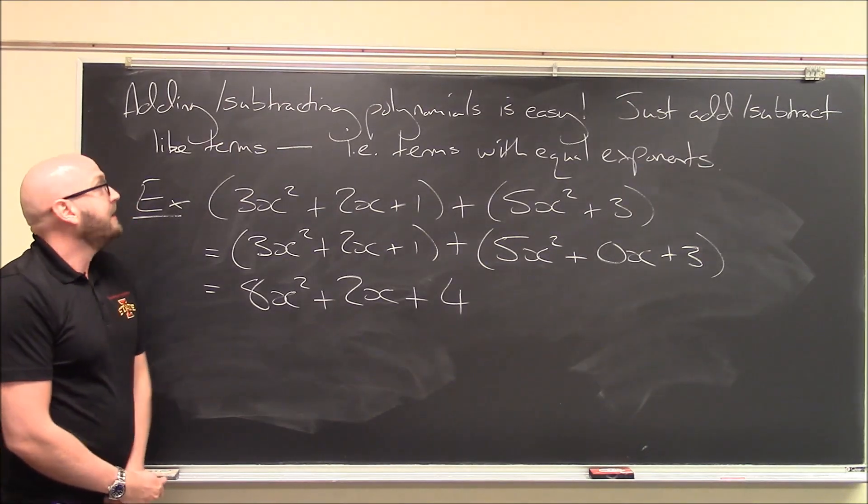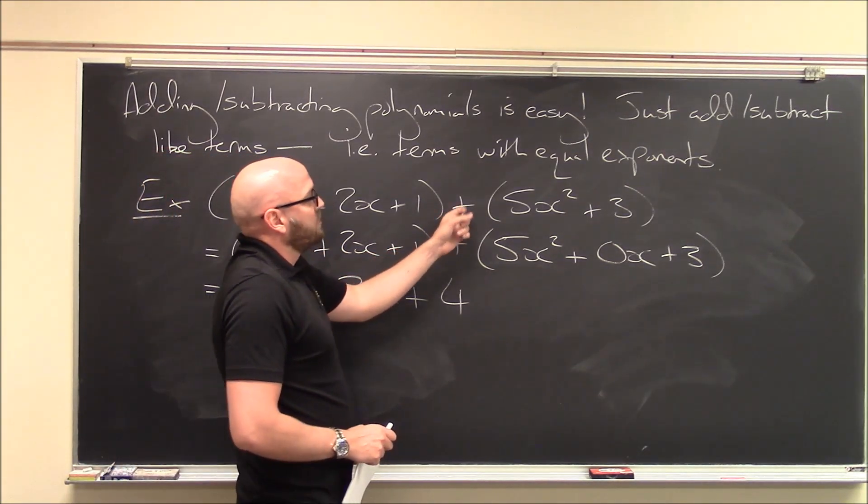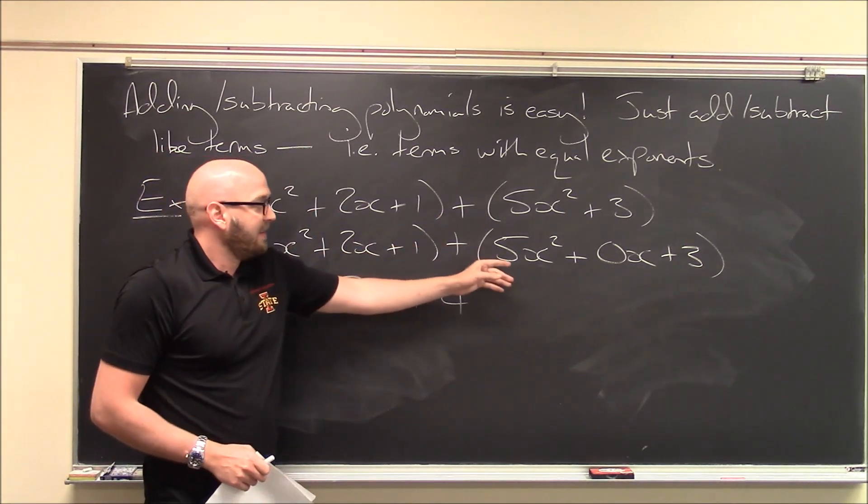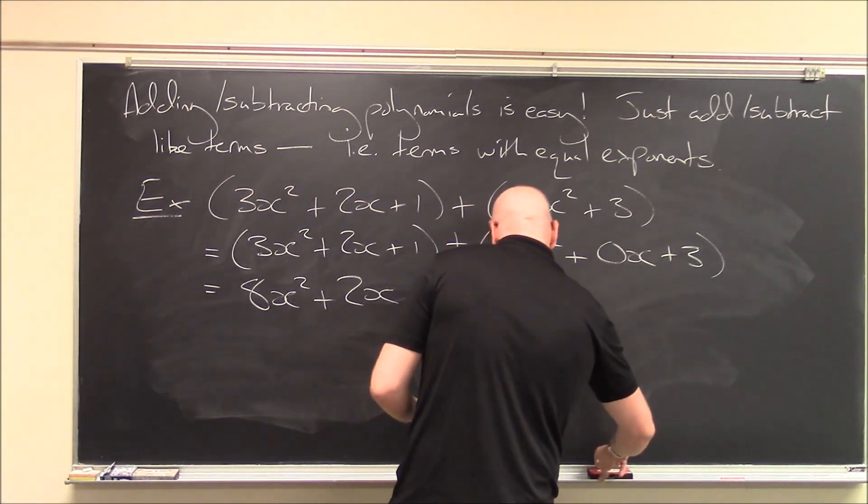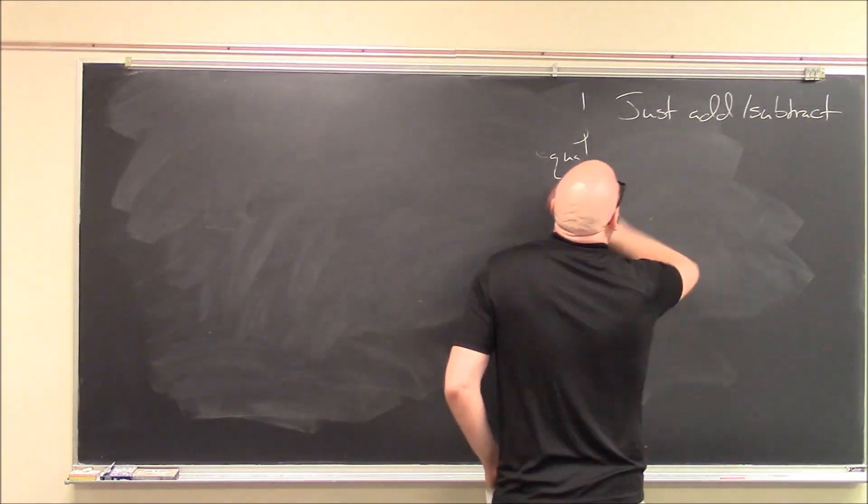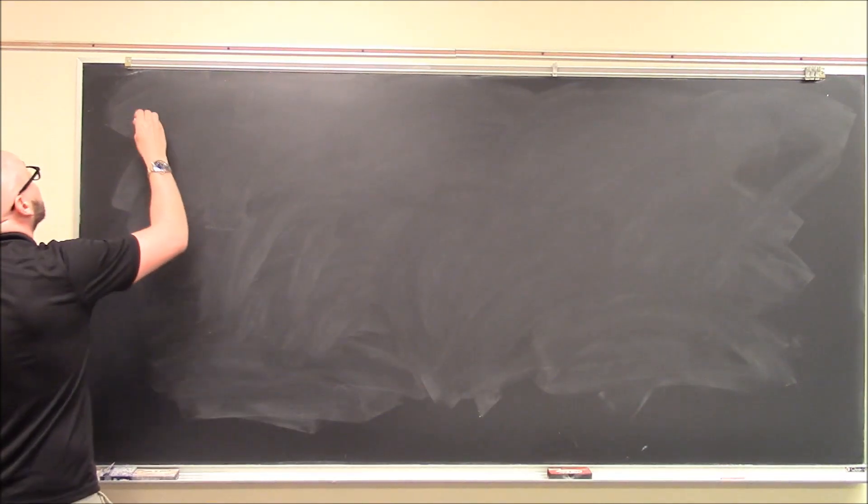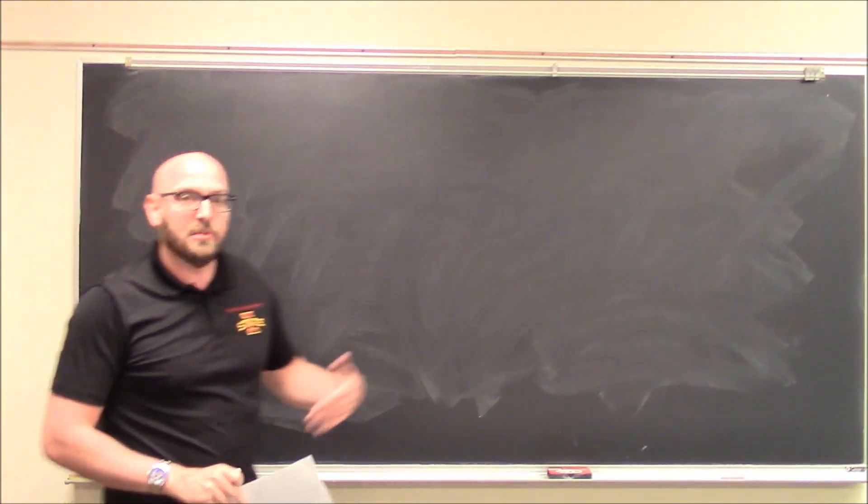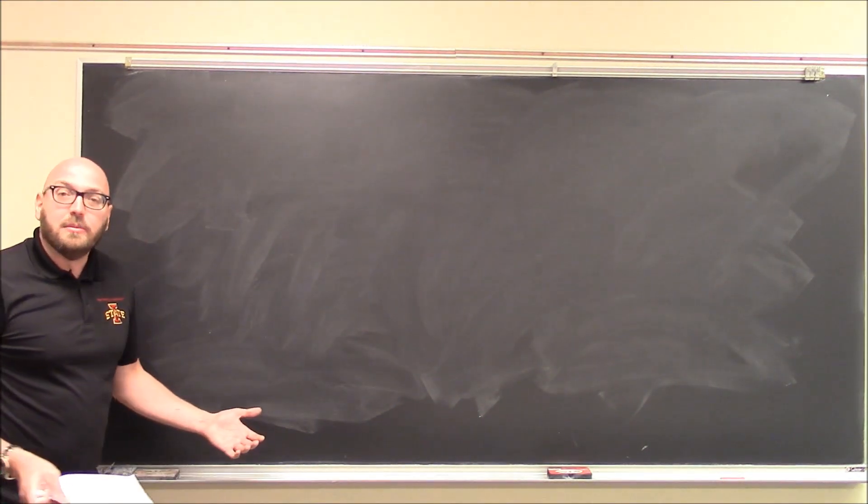And that's the sum of these two polynomials. So that's all there is to it. If I was going to subtract them, I won't do an example of subtraction, but if I was going to subtract them, I would just subtract the like terms from each other. All right, and lastly, what else might you do? So now we can add and subtract polynomials together. What else might you do? Well, you might want to multiply them together.